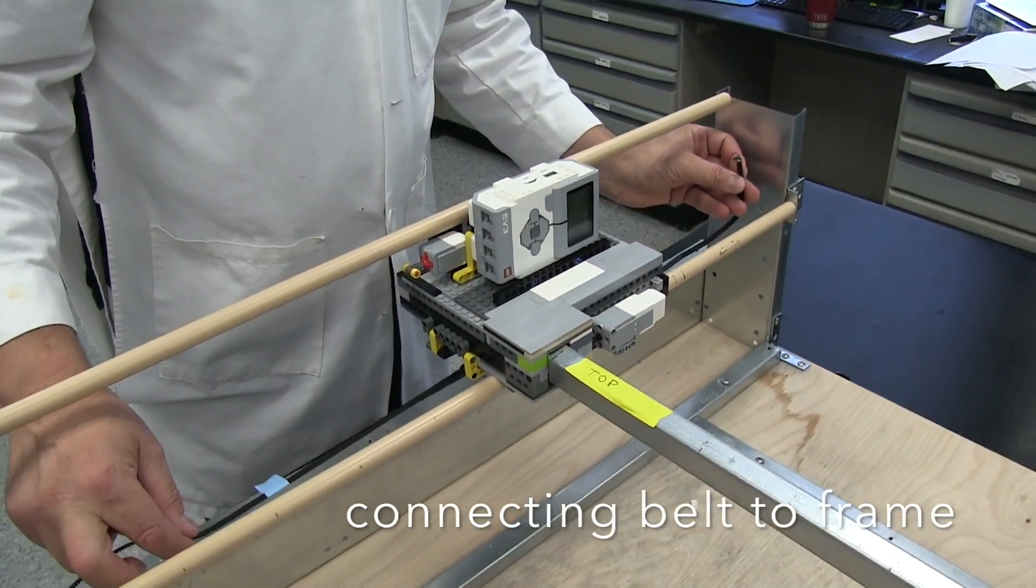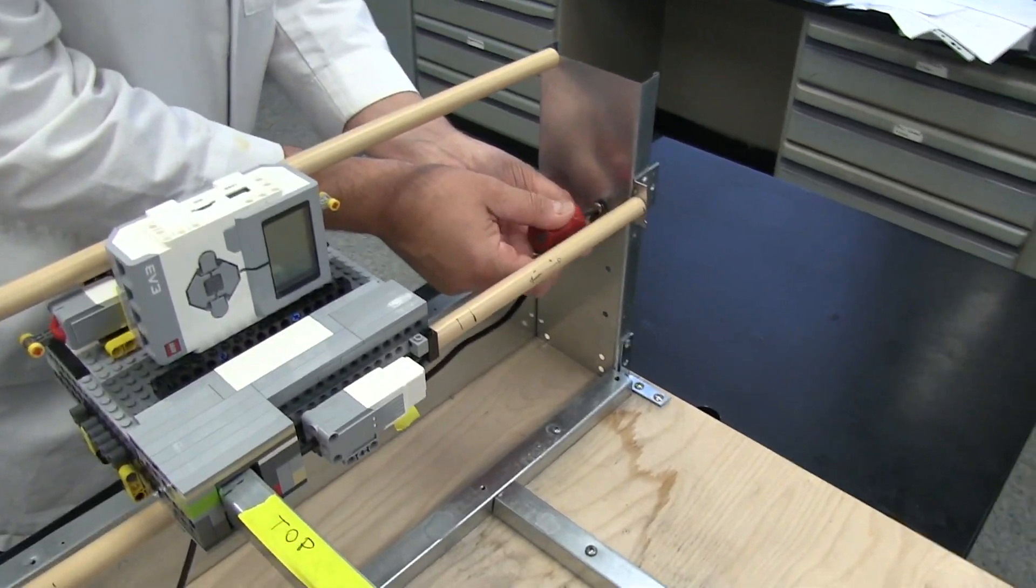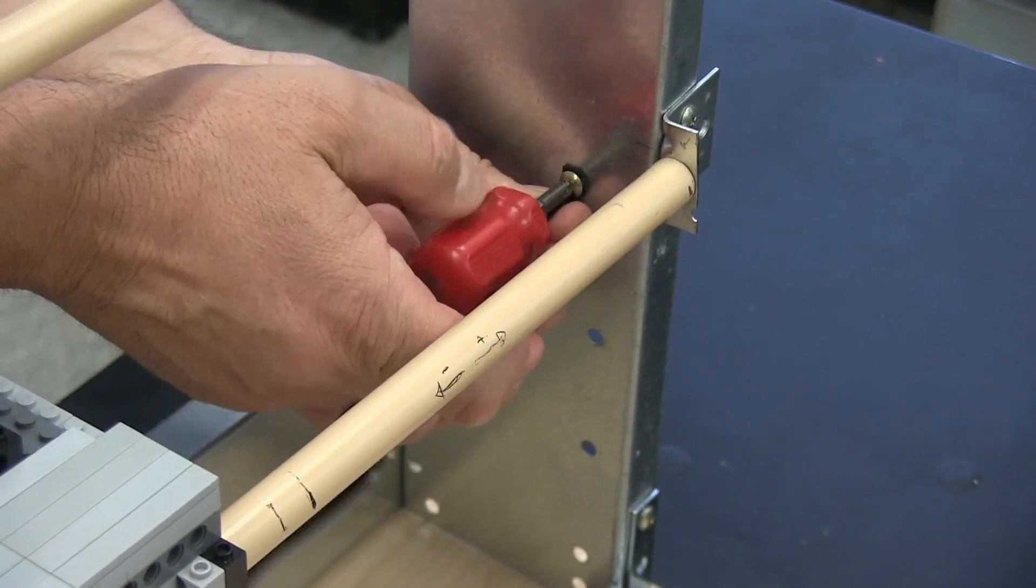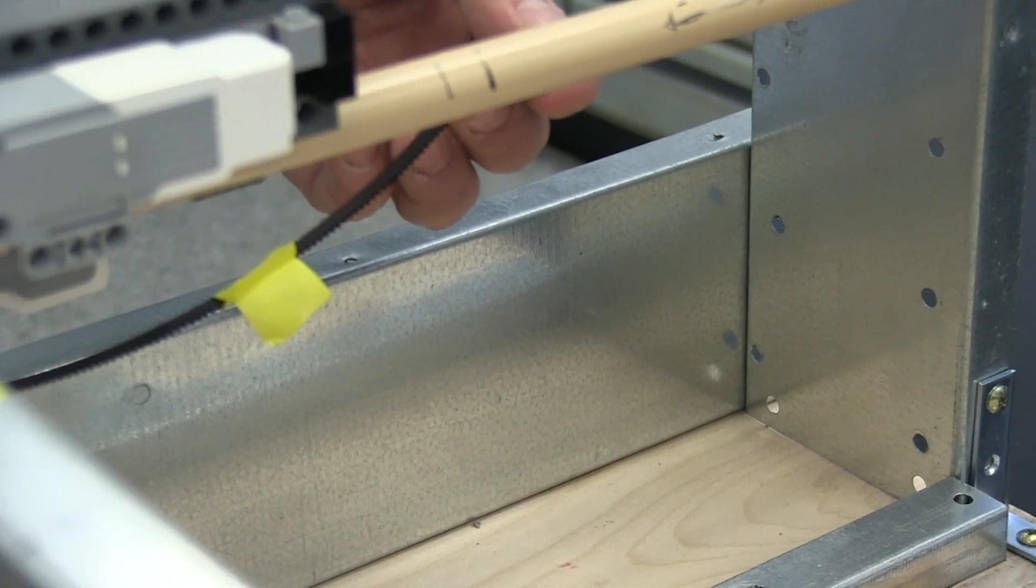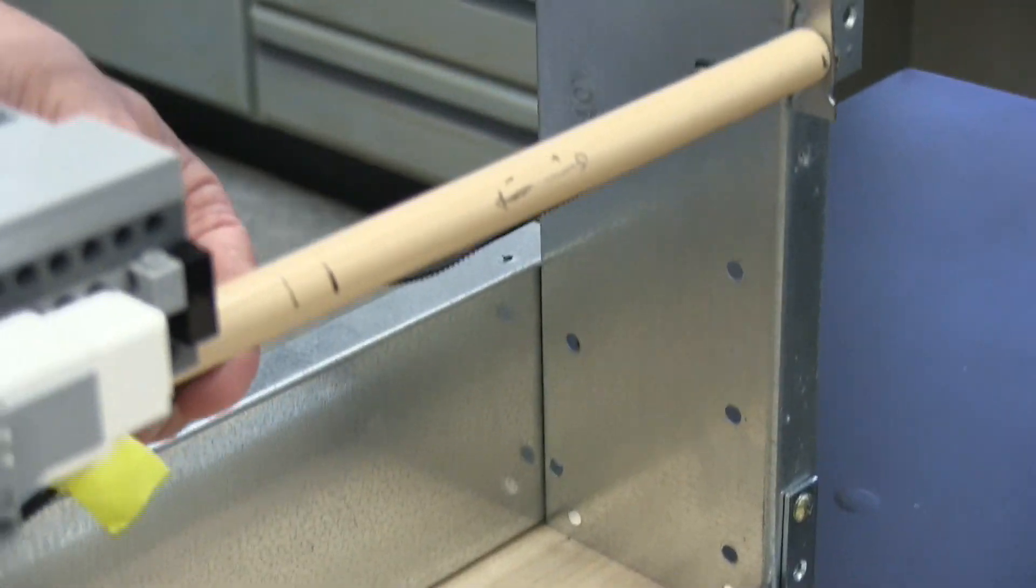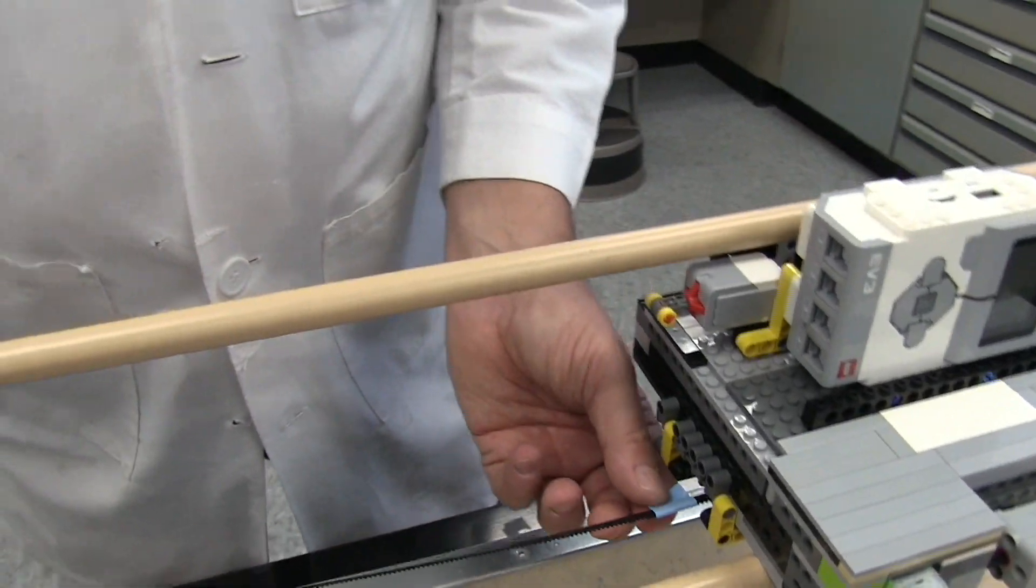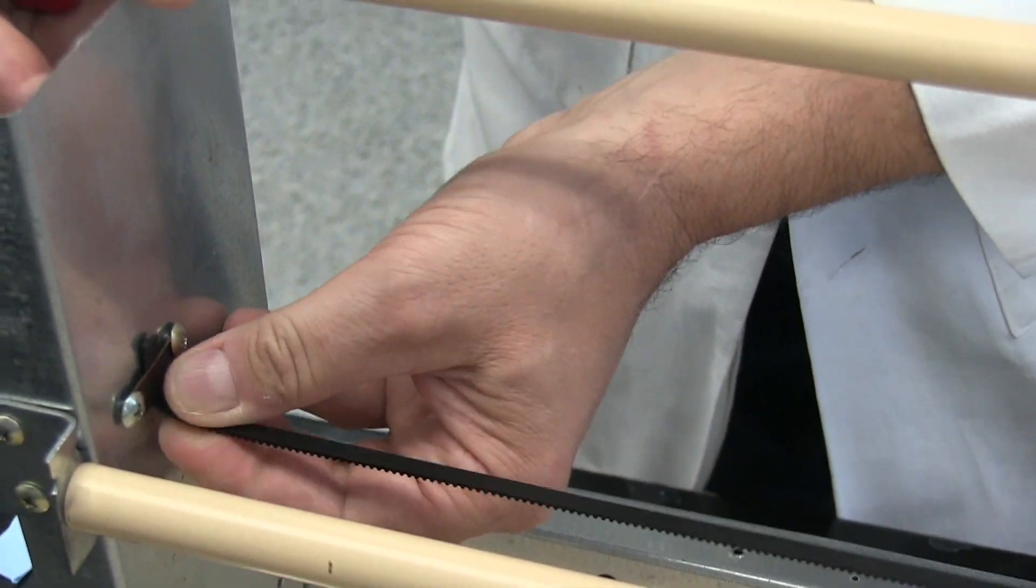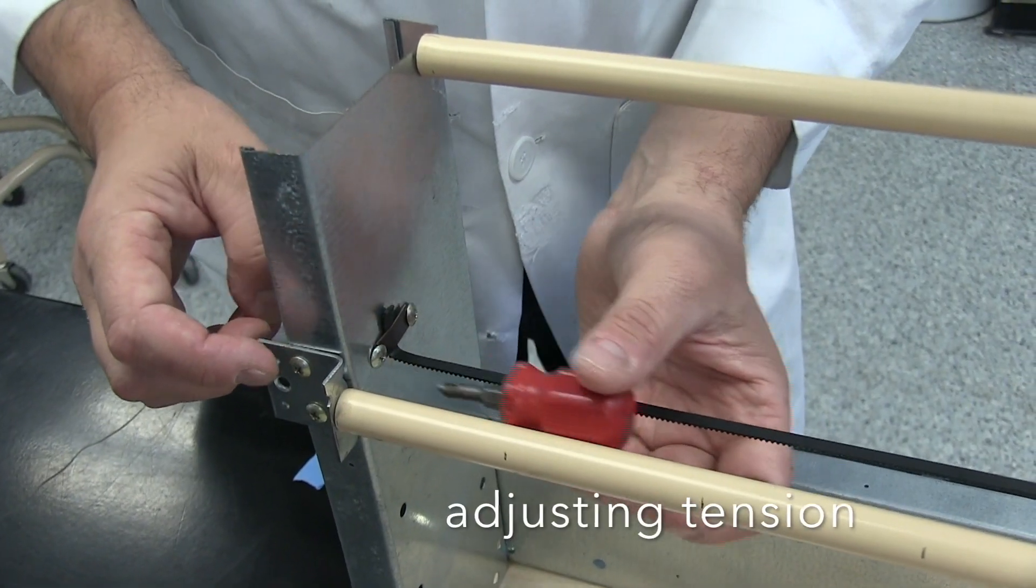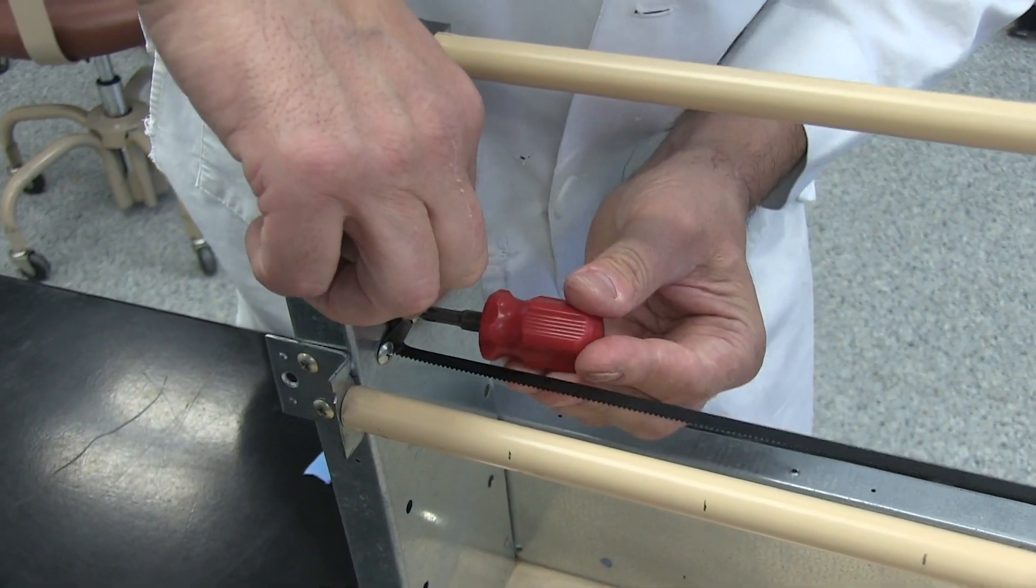At this point, we will attach the belt to the frame and it will be fixated on one side with a screw. The other side of the belt will be fixated through a tension device. This is created by linking two screwed pieces together and then tightening the screws to meet the required tension.